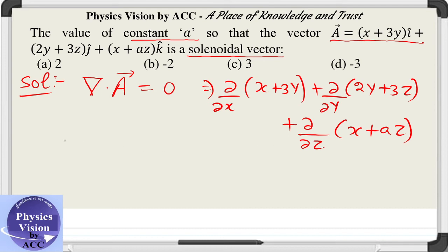It's very simple. The first derivative is 1, the next derivative is plus 2, and the next derivative is a. Put it equal to 0, which will give you a = -3.